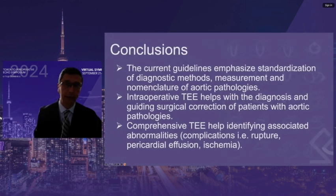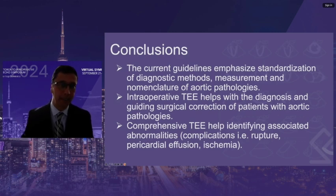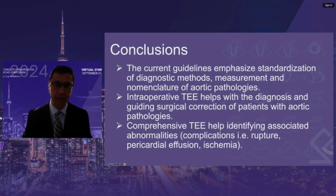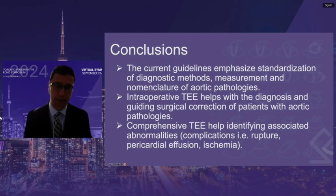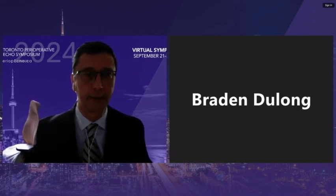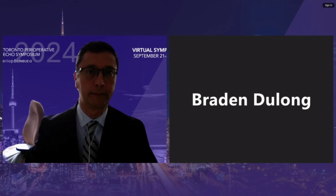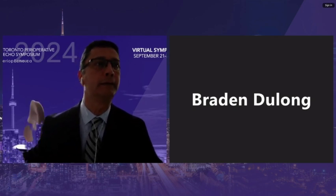In conclusion, current guidelines emphasize standardization of diagnostic methods, measurements, and nomenclature for aortic pathologies. Intraoperative TEE helps with diagnosis and guiding surgical correction for patients with aortic pathologies. Comprehensive TEE helps identify associated abnormalities and complications — for example, rupture, pericardial effusion, or ischemia. Victor can serve as moderator for the rest of the sessions this afternoon, introducing the various speakers and then hosting the Q&A at the end.